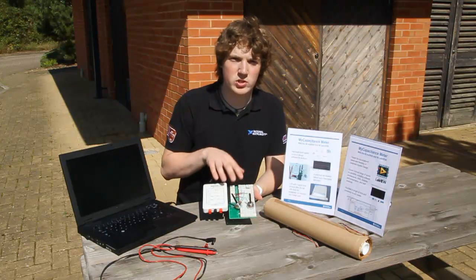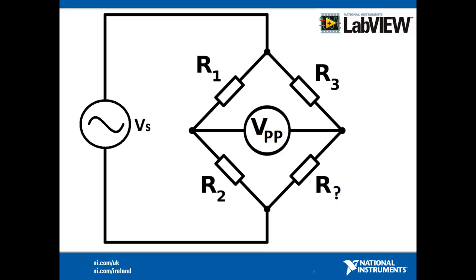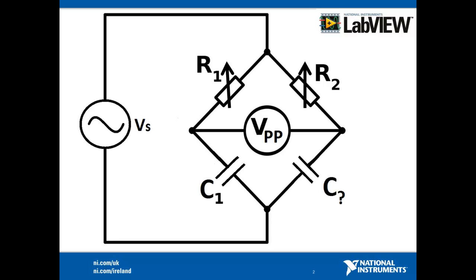Let's have a look in depth at what's going on on the breadboard. Here's the general diagram of a bridge circuit. There are many standard equations surrounding this setup, one of which allows us to determine the resistance value of any one of the resistors, so long as we know the values of the other three. The maths gets significantly easier if VPP, known as the bridge voltage, is equal to zero. When we reach this condition, we say that the bridge is balanced.